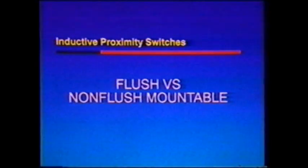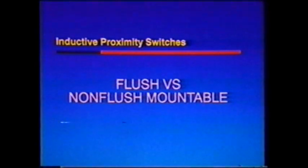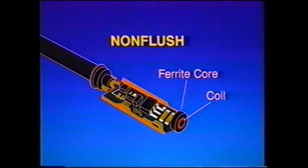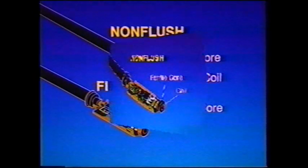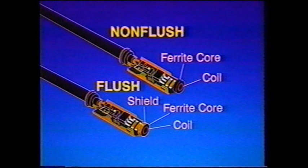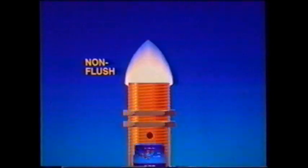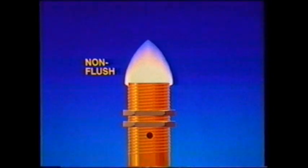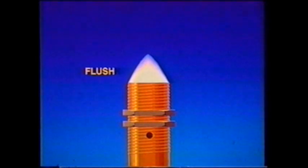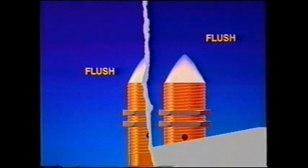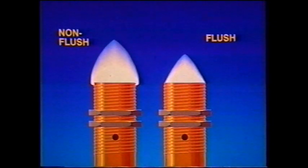In addition to the nominal sensing range, the manufacturer will specify whether a proximity switch is flush mountable or non-flush mountable. An inductive switch contains a coil and ferrite core, which produces a low energy oscillating electromagnetic field. Some switches also include a magnetic shield, which surrounds the core. Proximity switches without the shield — non-flush mountable switches — have a relatively wide sensing area that extends beyond the sides of the switch. The shield shapes the electromagnetic field and produces a narrower sensing area. The shielded or flush mountable switch also has a sensing range which is 25 to 50 percent shorter than a non-flush unit of the same size.